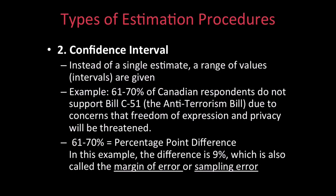For example, 61 to 70% of Canadian respondents do not support Bill C-51 due to concerns that freedom of expression and privacy will be threatened. In this example, there is a difference of 9%. This difference is also known as the margin of error or sampling error.